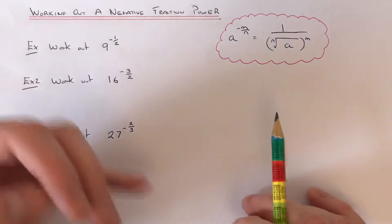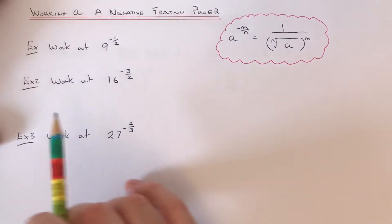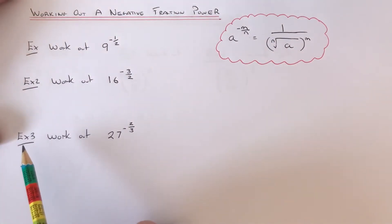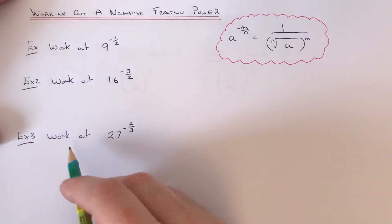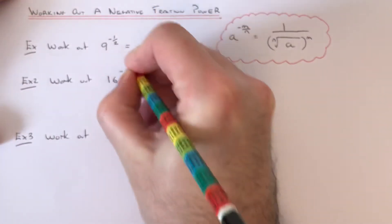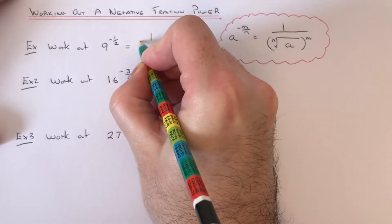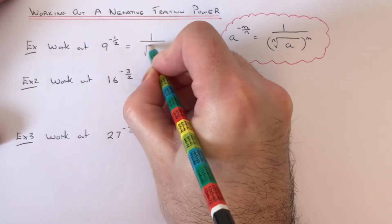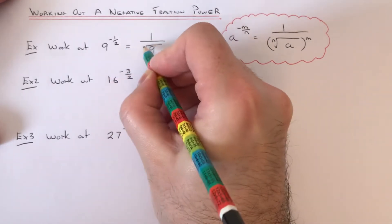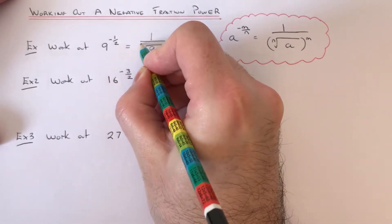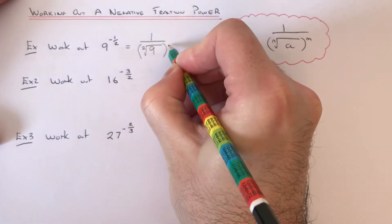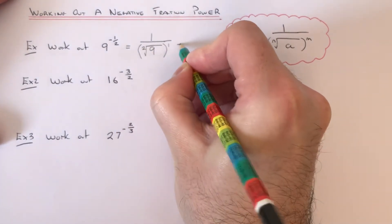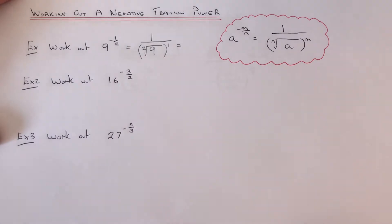So let's have a look at these three examples. First one is to work out 9 to the power of minus a half. So first of all, we go 1 over, so put the 9 here. We put a root over the 9, put the denominator on the root, then put a bracket around it and the numerator on the outside.